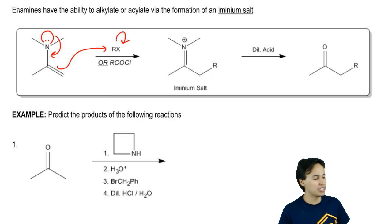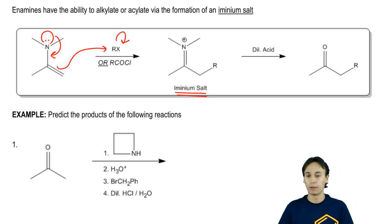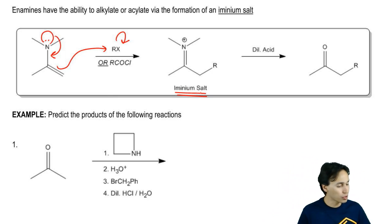What you wind up getting is the formation of an iminium salt, really important, iminium salt because now that nitrogen has a positive charge. More importantly, we just alkylated the alpha carbon.